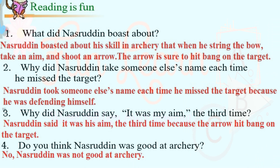Reading is fun. What did Nasiruddin boast about? Nasiruddin boasted about his skill in archery — that when he strings the bow, takes aim and shoots an arrow, the arrow is sure to hit bang on the target. Why did Nasiruddin take someone else's name each time he missed? Because he was defending himself. Why did Nasiruddin say 'it was my aim' the third time? Because the arrow hit bang on the target. Was Nasiruddin good at archery? No, Nasiruddin was not good at archery.